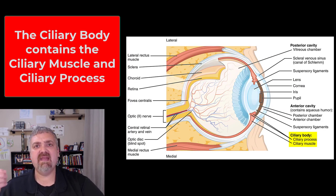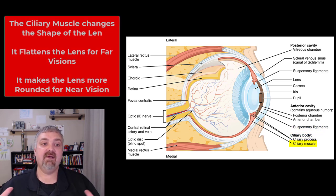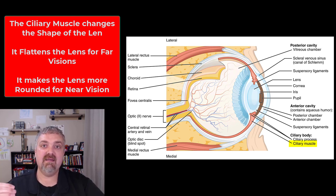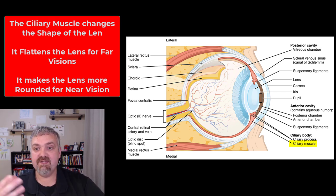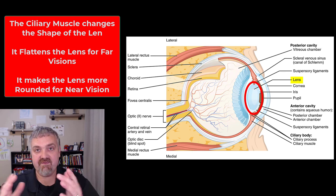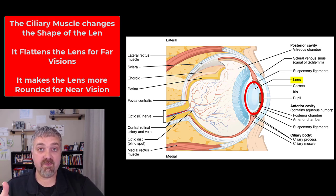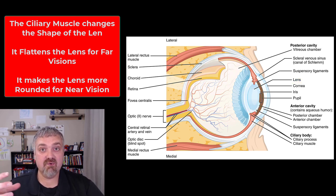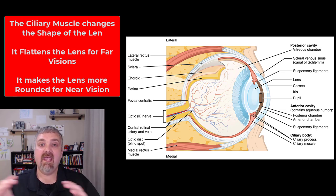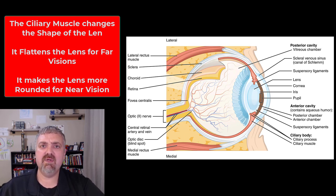Next, the ciliary body is made of the ciliary muscle and the ciliary processes, which attach to the suspensory ligaments of the lens. The ciliary muscle is a circular muscle attached around the entire lens; by contracting and relaxing it tugs on or releases the lens, changing its shape and therefore where images are focused on the retina. The lens contains transparent proteins called crystallins — similar to how ground glass makes optical lenses — which refract light to focus images onto the photoreceptors of the retina, the rods and cones. A flat lens is good for far vision; a more rounded lens is good for near vision.